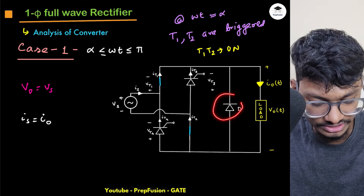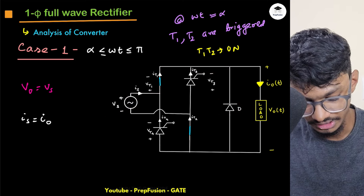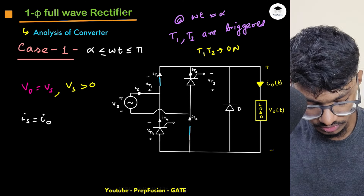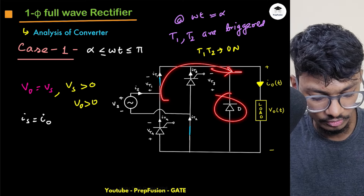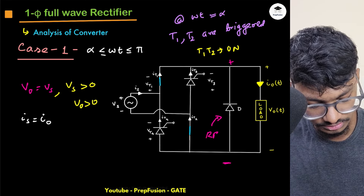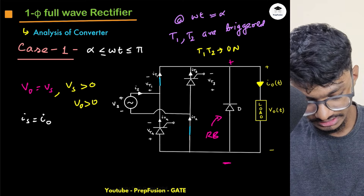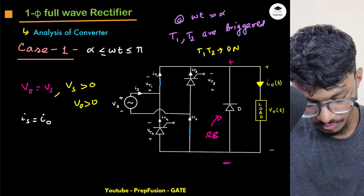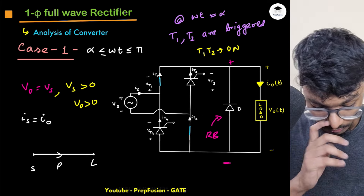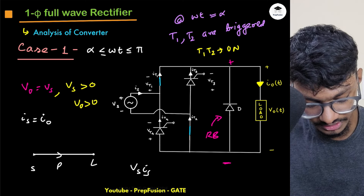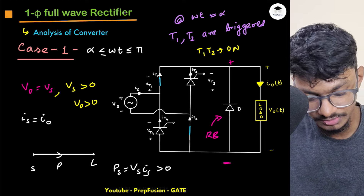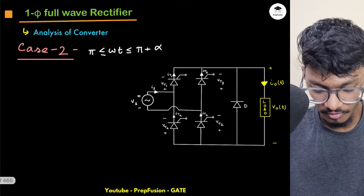The freewheeling diode will be off because in the region alpha to pi, Vs is positive, so Vo is also positive. At the anode of the diode there is positive and at the cathode negative, so the diode is reverse biased. Power is flowing from source to load because Ps equals Vs times Is — both Vs and Is are positive, hence power flows from source to load. This first case is straightforward.